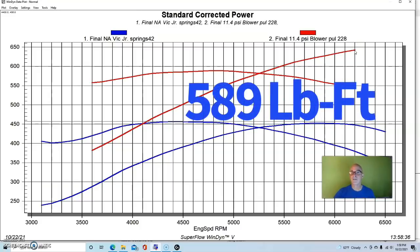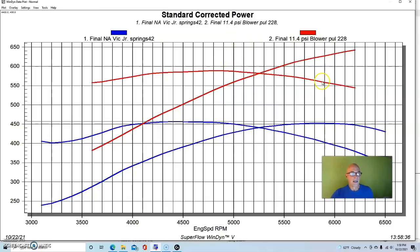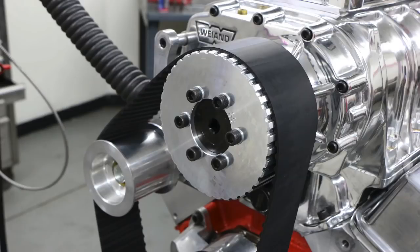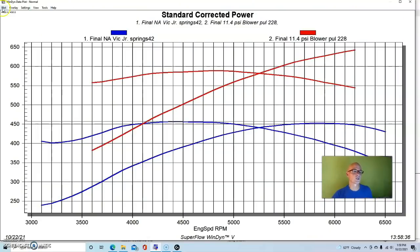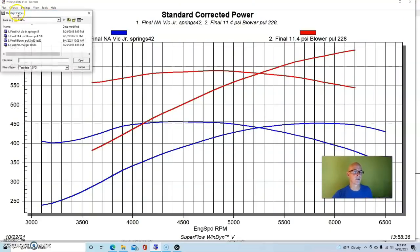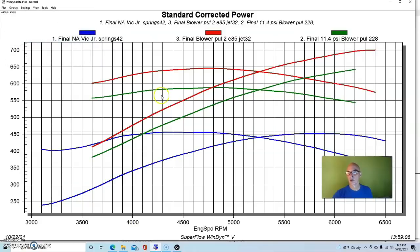You can see the first thing that we did was obviously you can turn the boost up, but what we did was ran E85 in it and it really liked the E85 rather than having just pump gas, 91 pump gas in this thing. So run with the E85 and another two degrees of timing, this combination jumped up to 700 horsepower and 646 foot-pounds of torque.